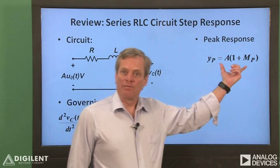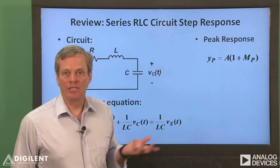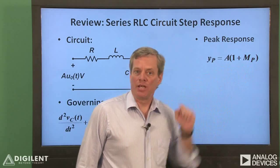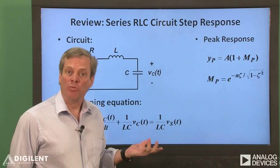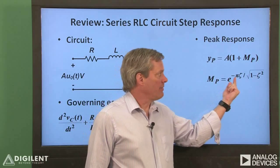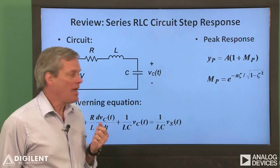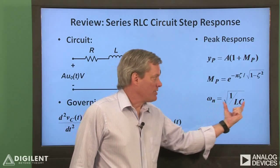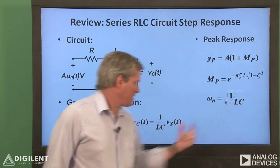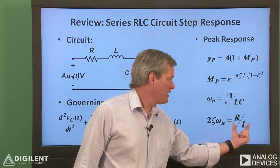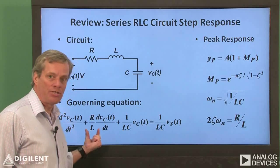We've seen that the peak response of a second-order system to a step input is the amplitude of the input, A, times 1 plus the percent overshoot. The maximum overshoot is e to the minus pi zeta divided by the square root of 1 minus zeta squared, where the natural frequency is square root of 1 over LC, and 2 zeta omega_N is R over L.